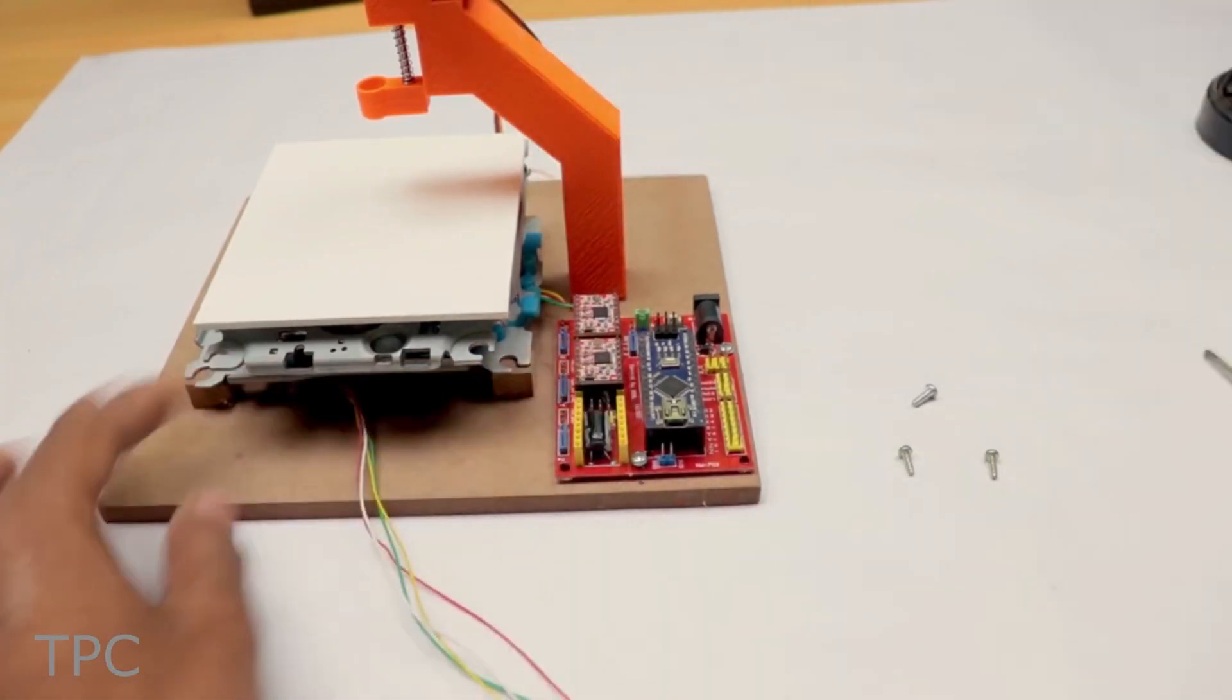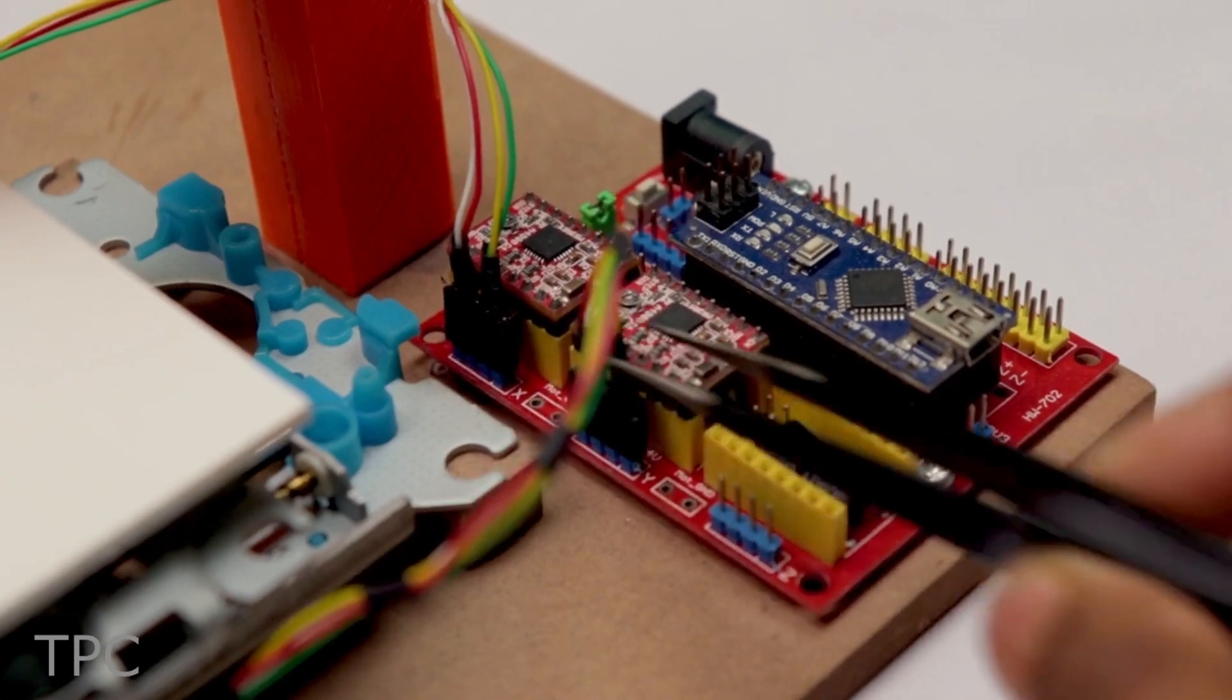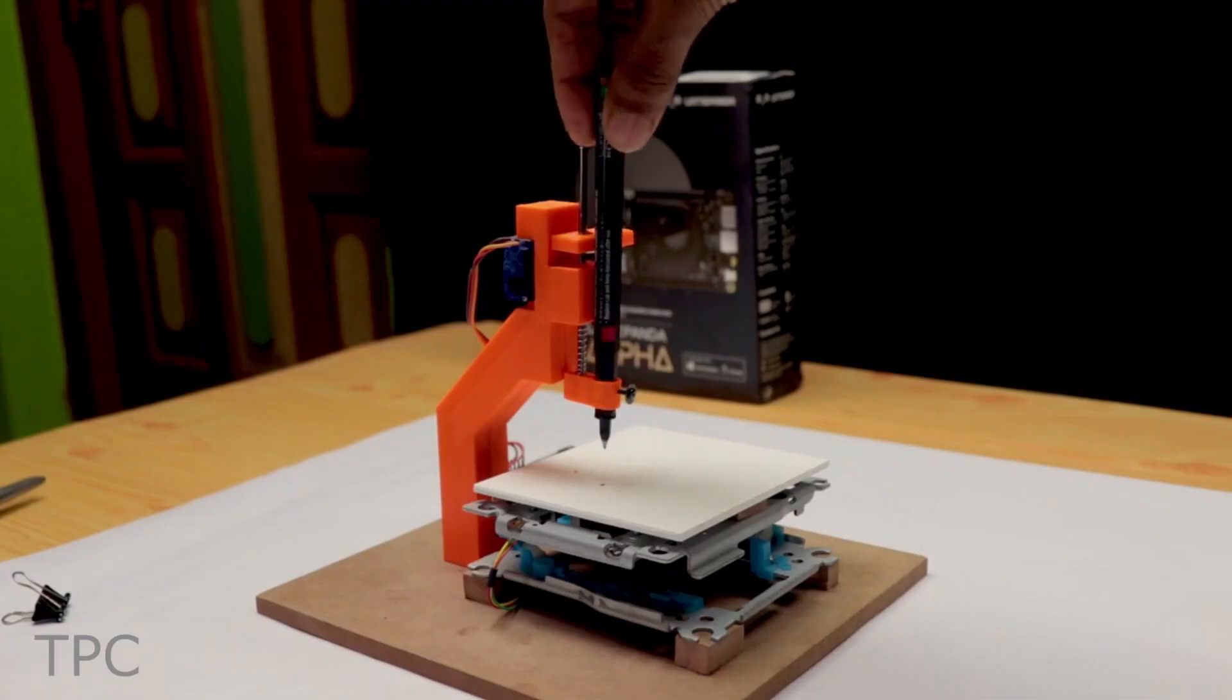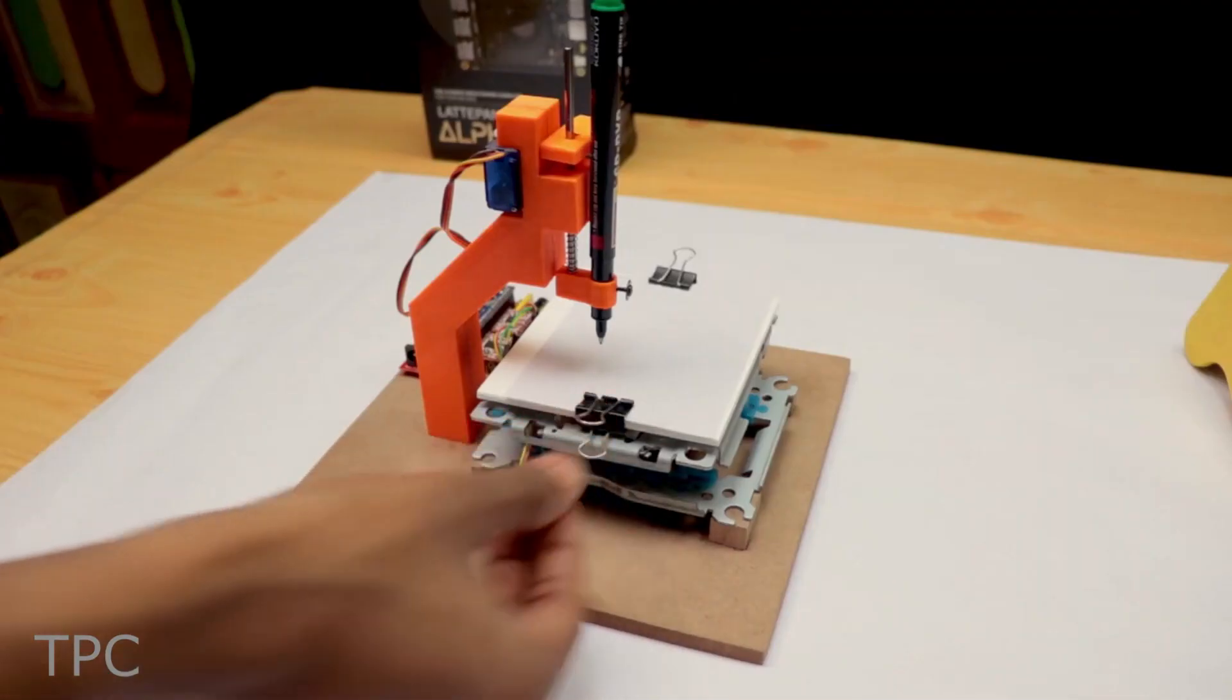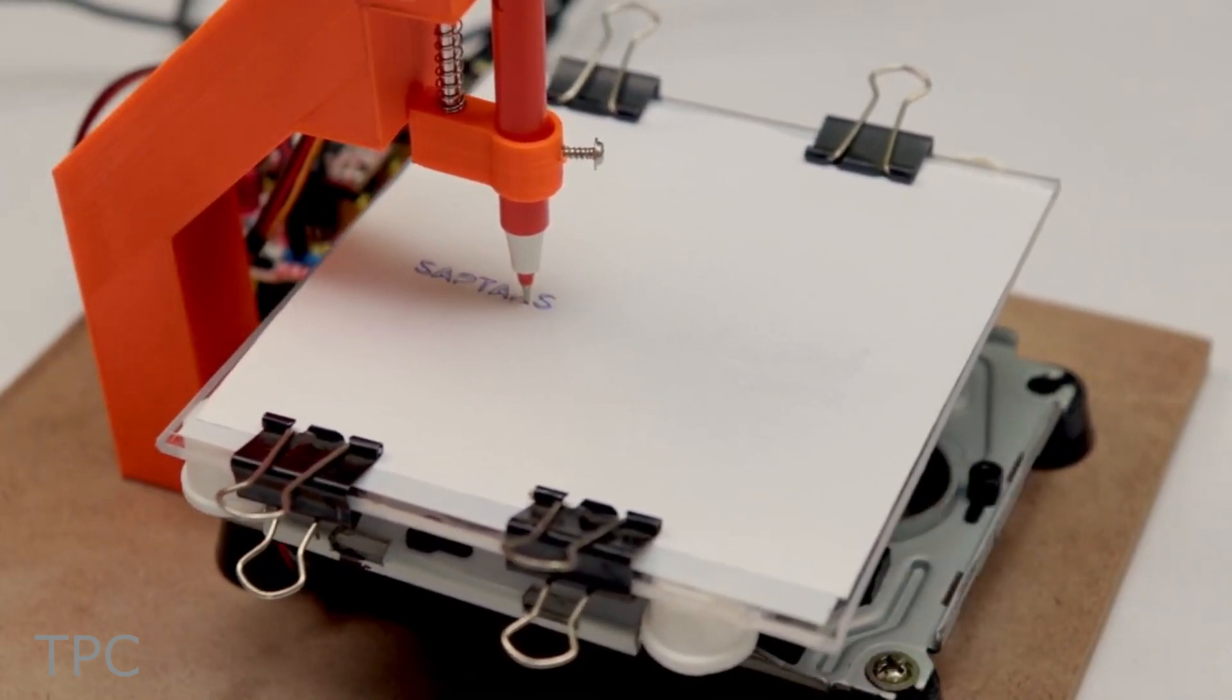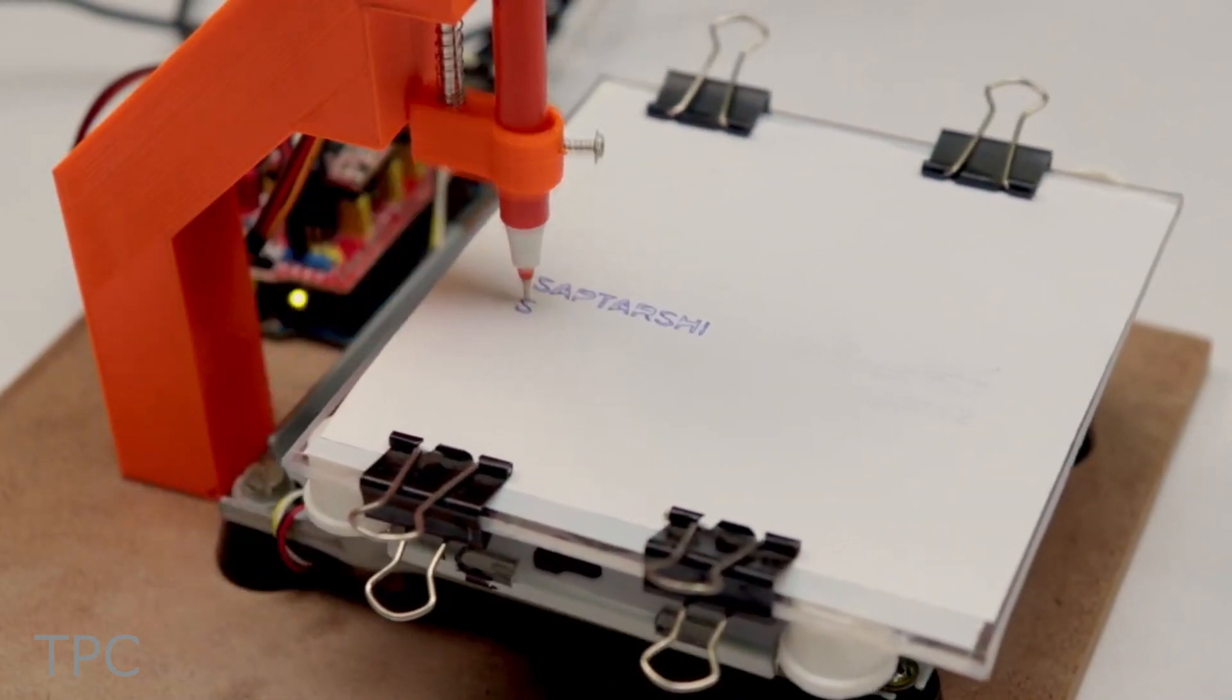The CNC shield holds two A4988 stepper motor drivers and an Arduino Nano. It also has a digital I/O interface and I2C interface, by which other modules can be connected. Uploading the hex file to the software lets you draw any shape or text on a flat surface.